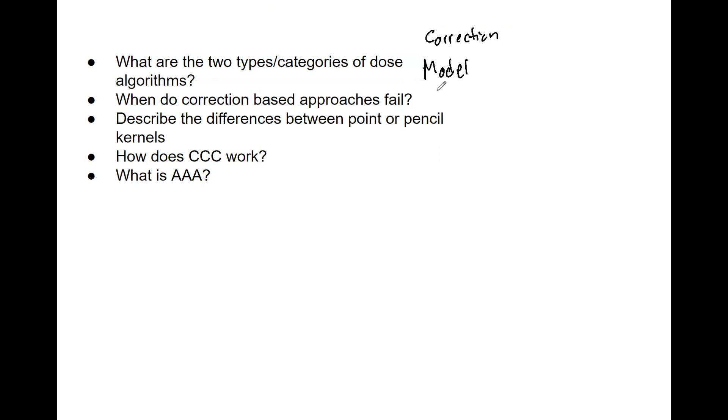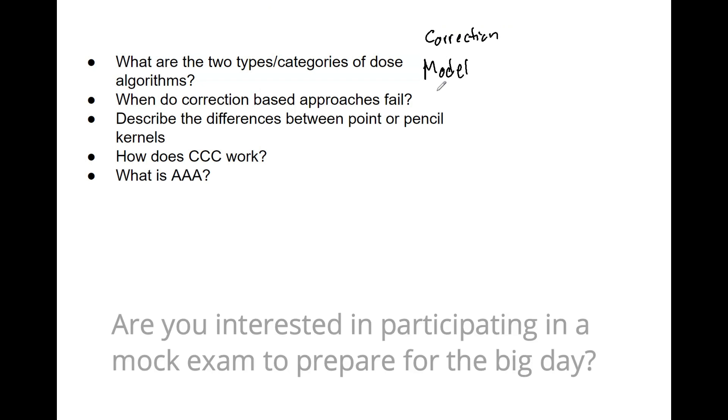One of those are the limitations of small fields, because this cannot take into account effects of variable scatter. For example, when lateral charged particle equilibrium isn't attained, there's just no way for these correction-based approaches to accommodate that, and so you lose accuracy.